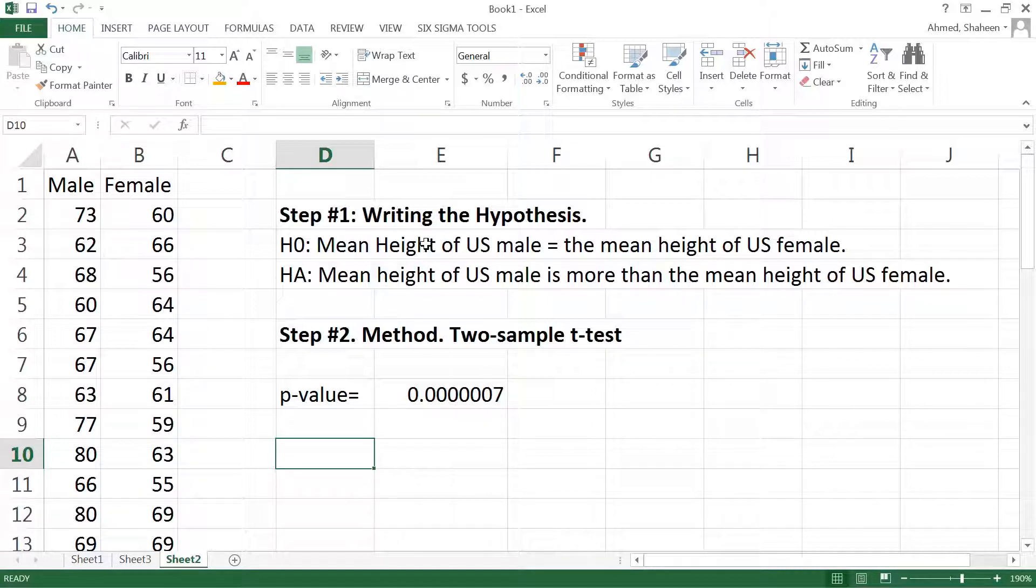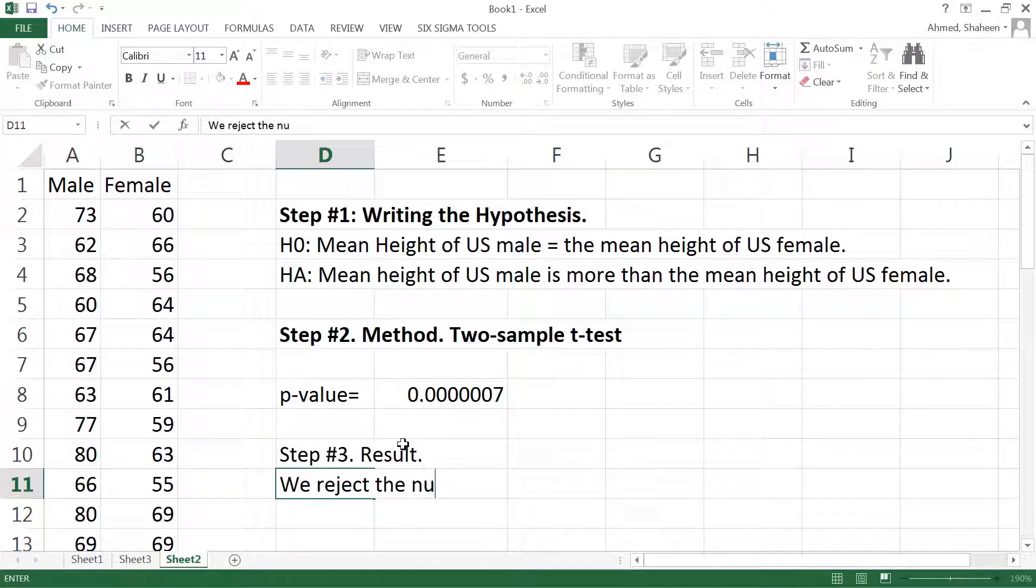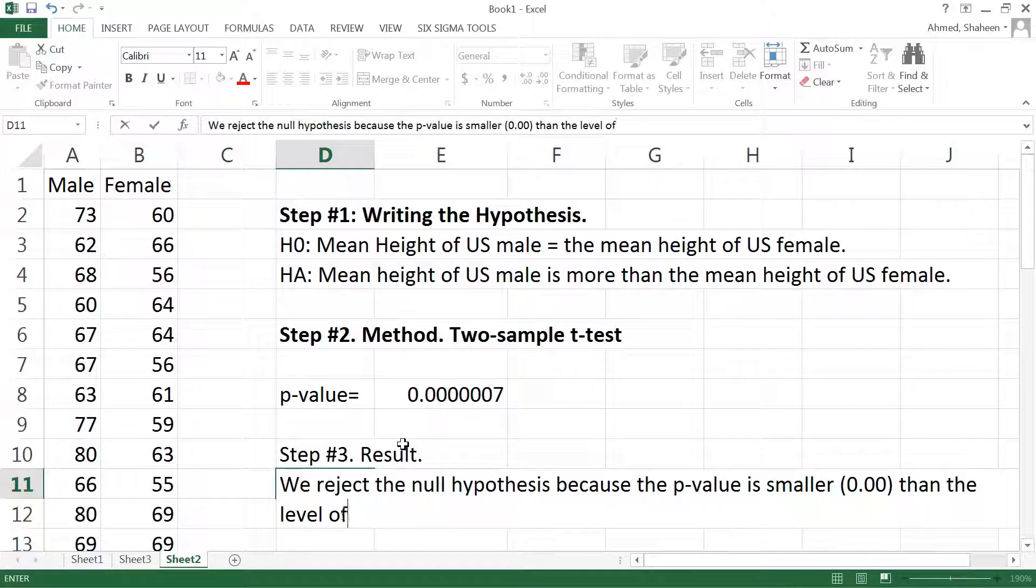So our Step Number Three is the result. So we write the result this way: we reject the null hypothesis because the p-value is smaller, you don't have to write too small, just smaller than the level of significance, which is 0.05 if it's not mentioned.